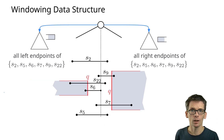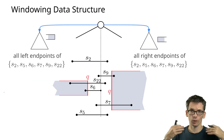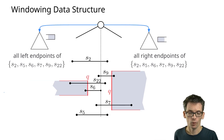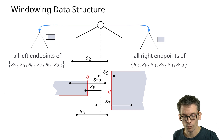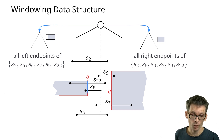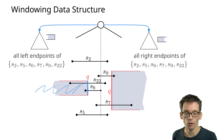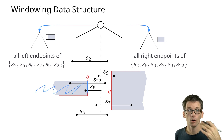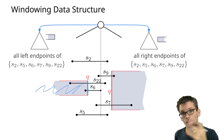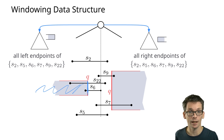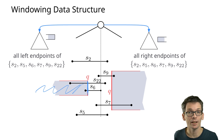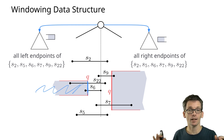Our motivation was for the windowing data structure, where we had these three-sided queries when querying with a vertical segment, where we had to find all endpoints of horizontal segments in this three-sided query. For these types of queries we can use a very simple data structure: a priority search tree.